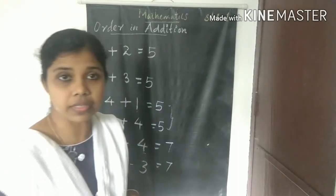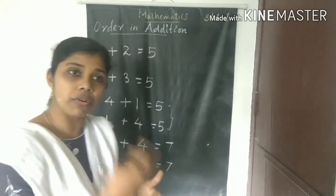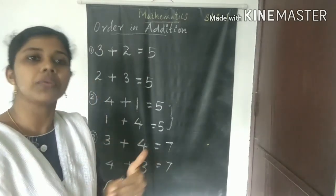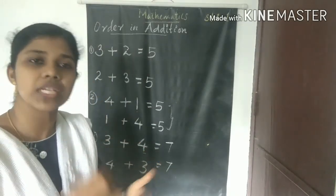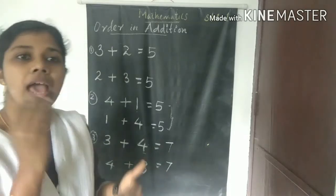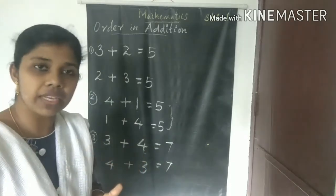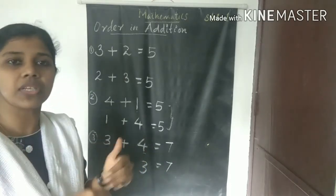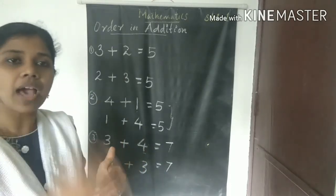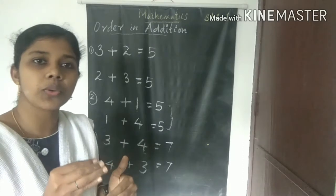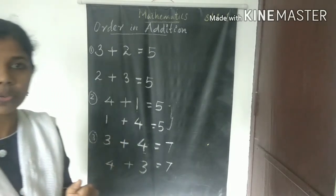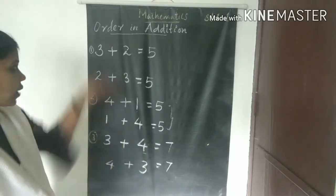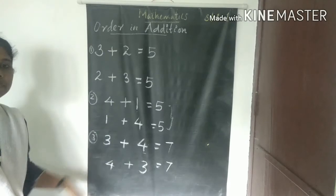If we add the numbers in any order, it does not change the value. The order of the numbers may change, but the answer in addition remains the same. Clear?